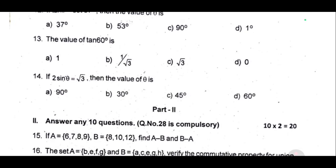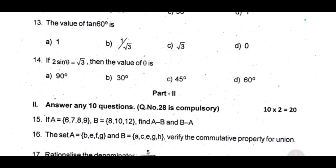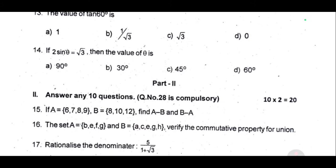Question number 28 is compulsory. 15th one, if A equal to 6 comma 7, 8, 19, B equal to 8 and 12, find A minus B and B minus A. 16th one, the set A equals B, E, F, G; B equals A, C, E, G, H, G. Verify the commutative property for union.